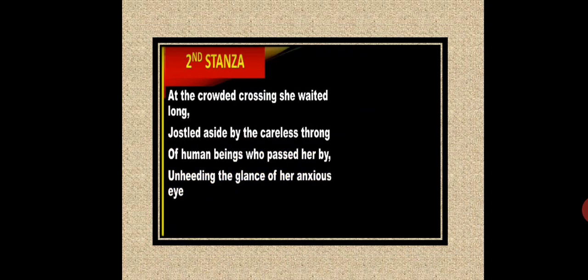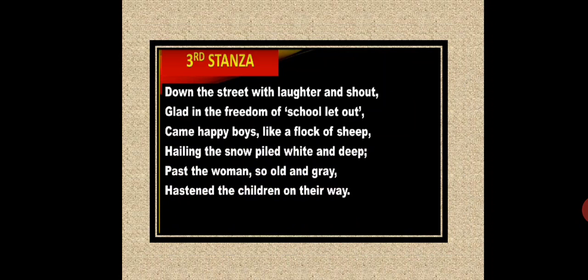The rhyming words in the second stanza are: long/throng and by/eye. Now the third stanza: Down the street with laughter and shout, glad in the freedom of school let out, came happy boys like a flock of sheep, hailing the snow pile with white and deep — past the woman so old and grey, hastening the children on their way.